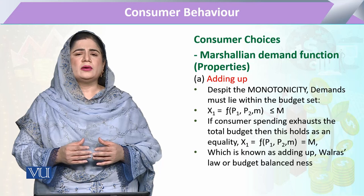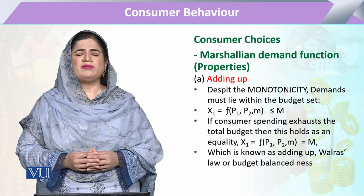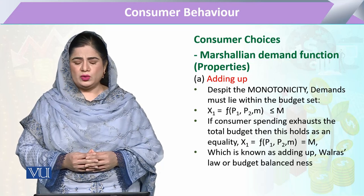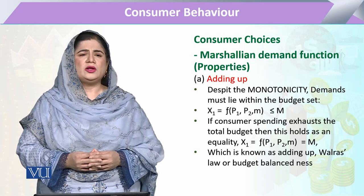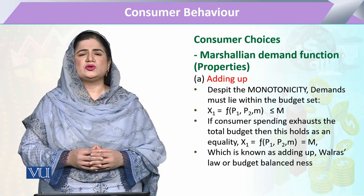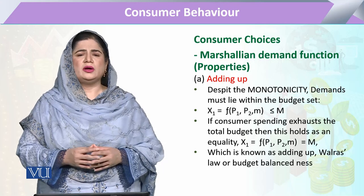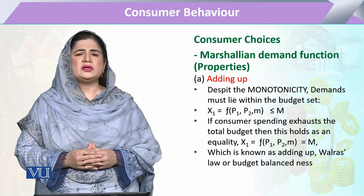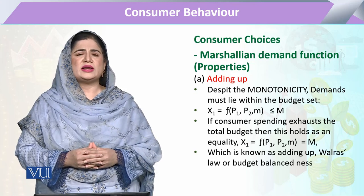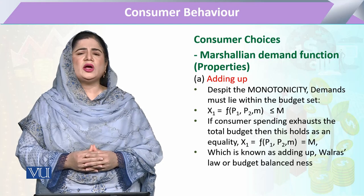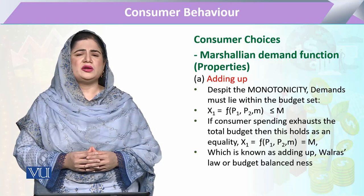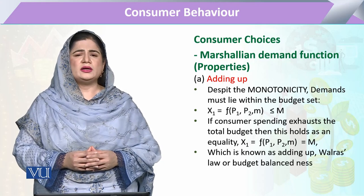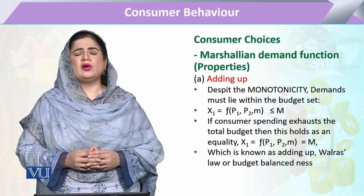The consumer prefers to take utility through an indirect form. When we say that there is a property, it means these things should be a necessary part of the parameters or policies. Whatever we conclude related to the Marshallian Demand Function, if any of these properties are violated, then the general conclusion will not hold.